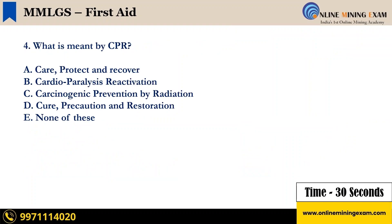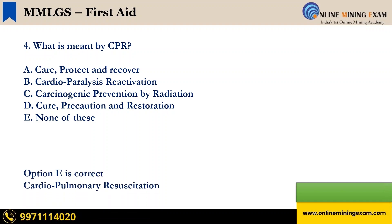Next question: what is meant by CPR? A — care, protect and recover; B — cardio paralysis reactivation; C — carcinogenic prevention by radiation; D — cure, precaution and restoration; E — none of these. Your time starts now. Time up. The correct answer is E — cardiopulmonary resuscitation.